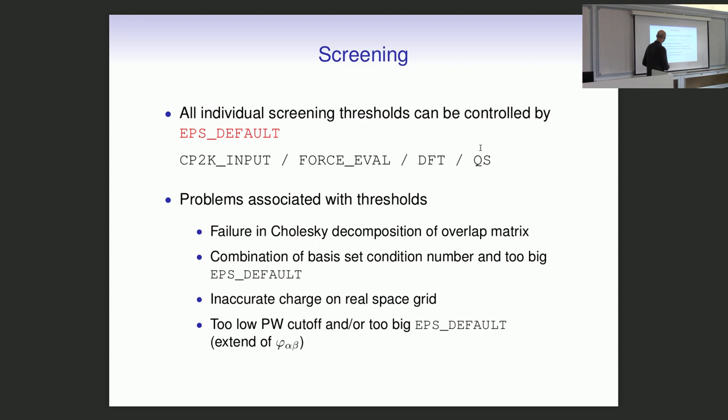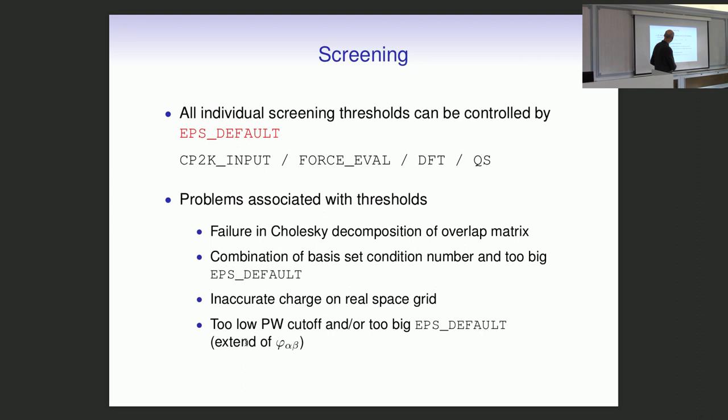You can check the charge on the real-space grid printed in the output: if EPS_DEFAULT cuts too aggressively, the total number of electrons on the grid will be incorrect. This accuracy depends on both the plane wave cutoff and EPS_DEFAULT.